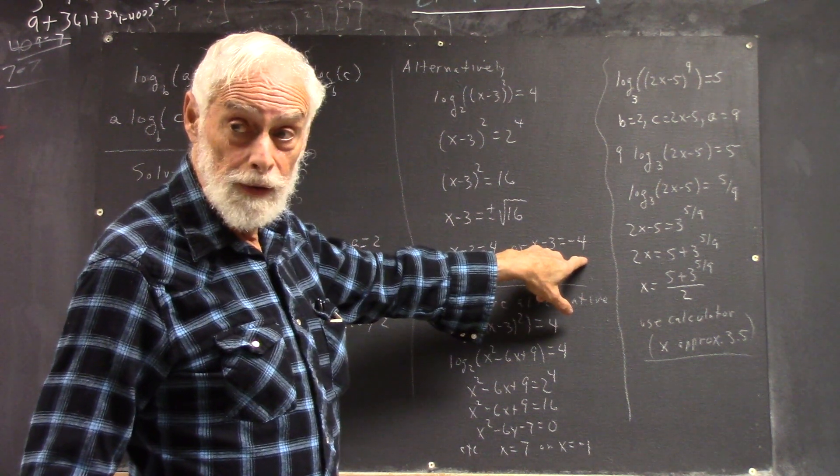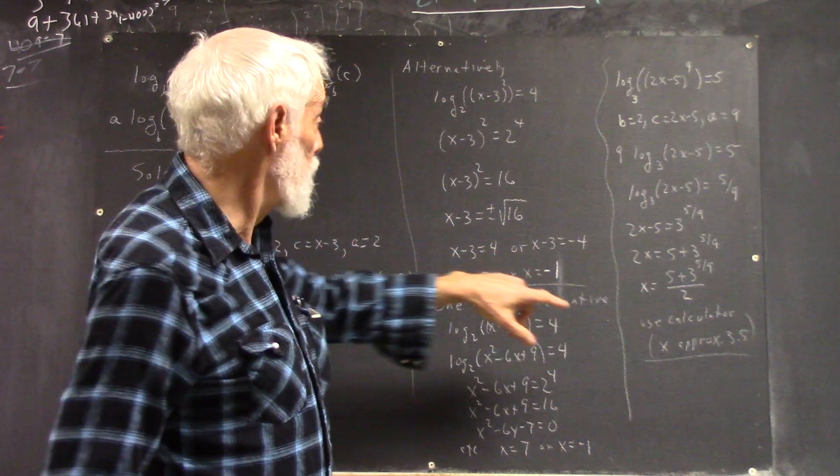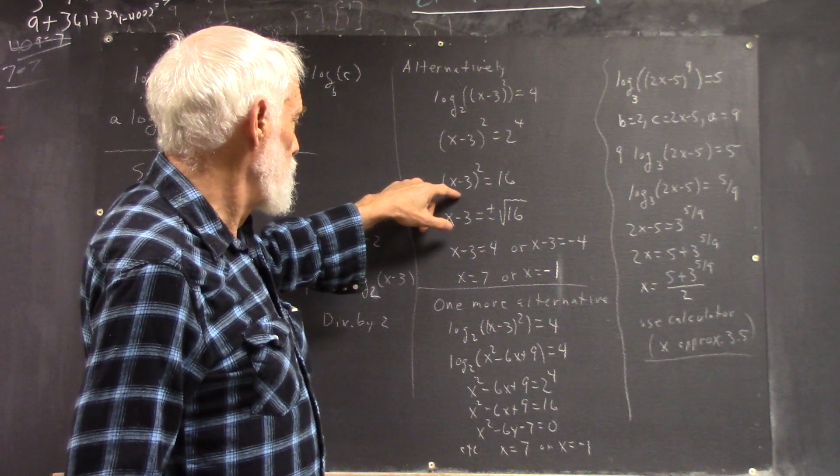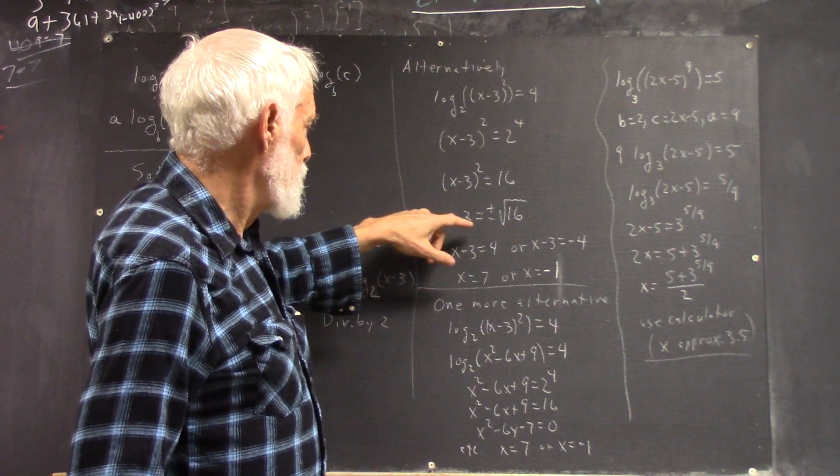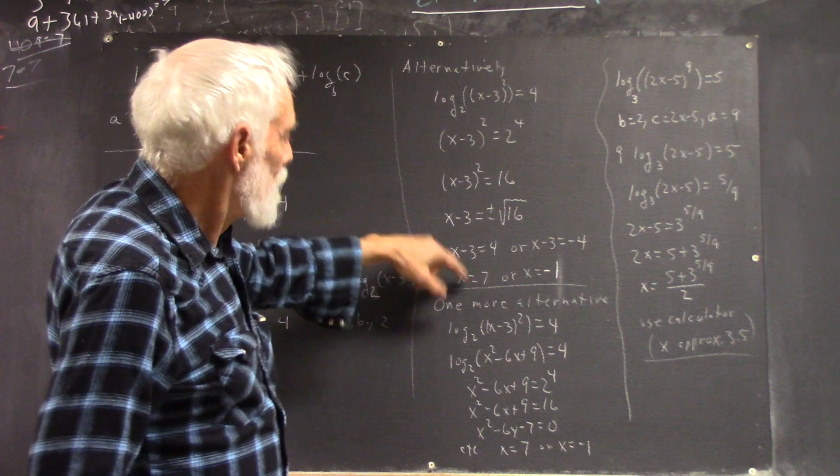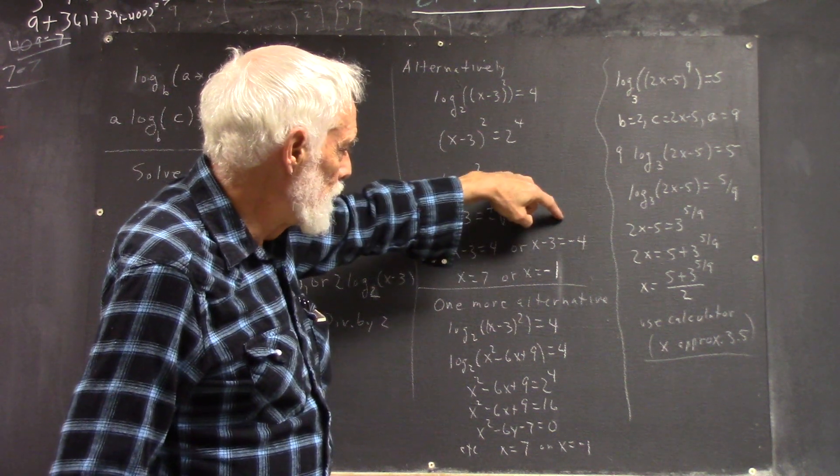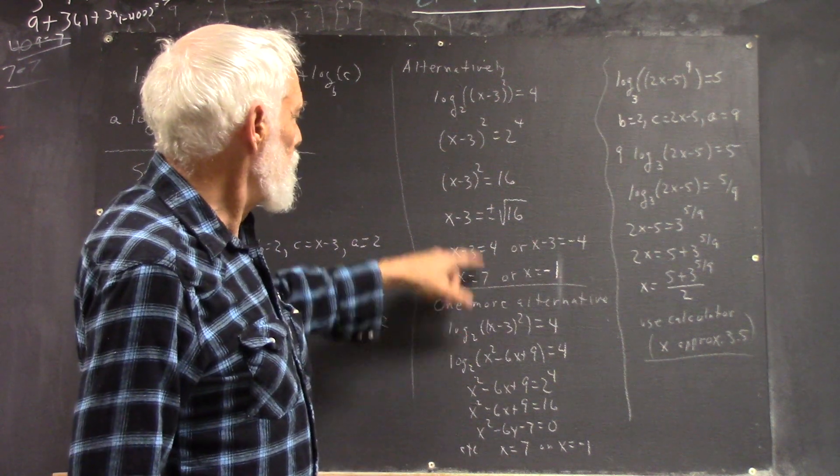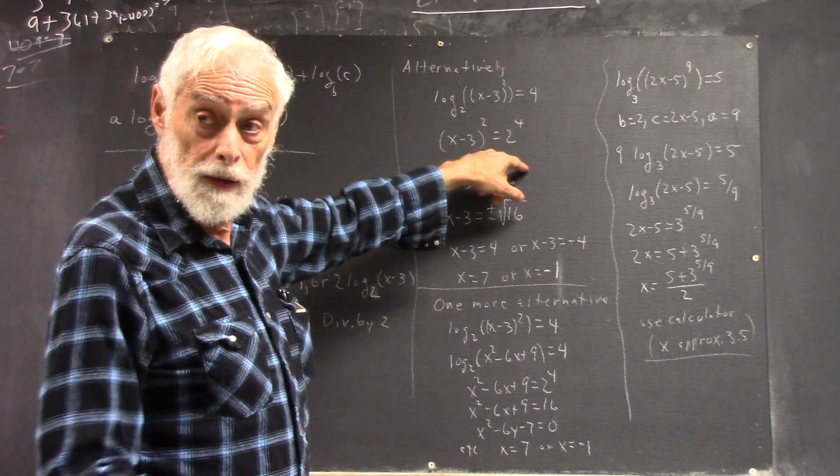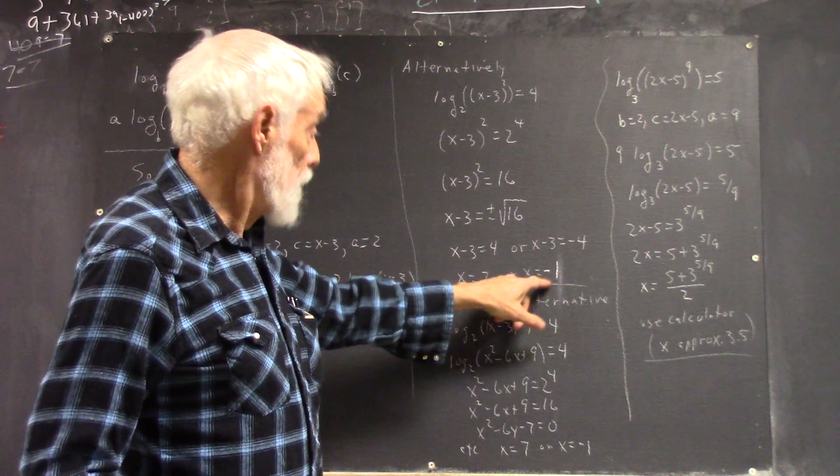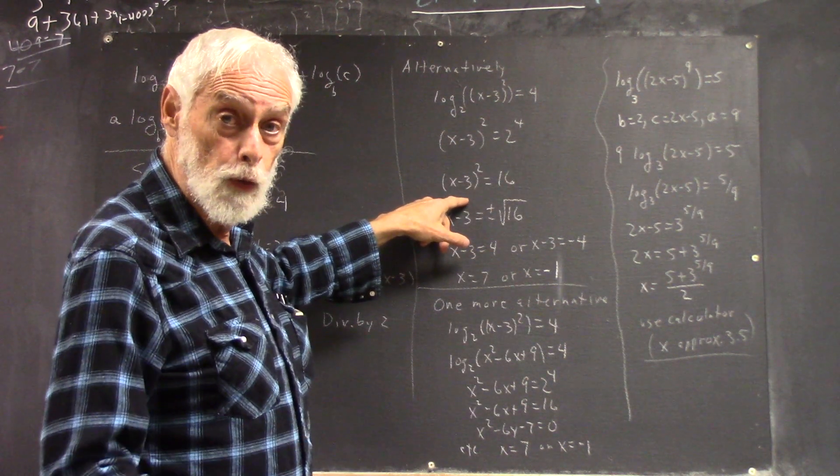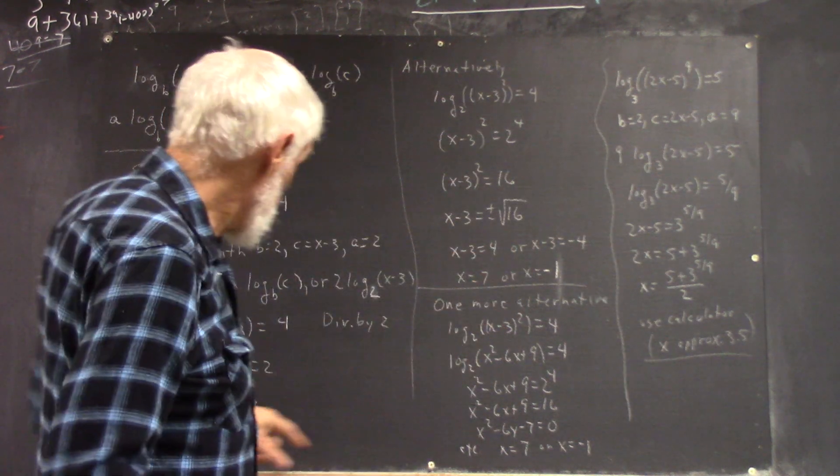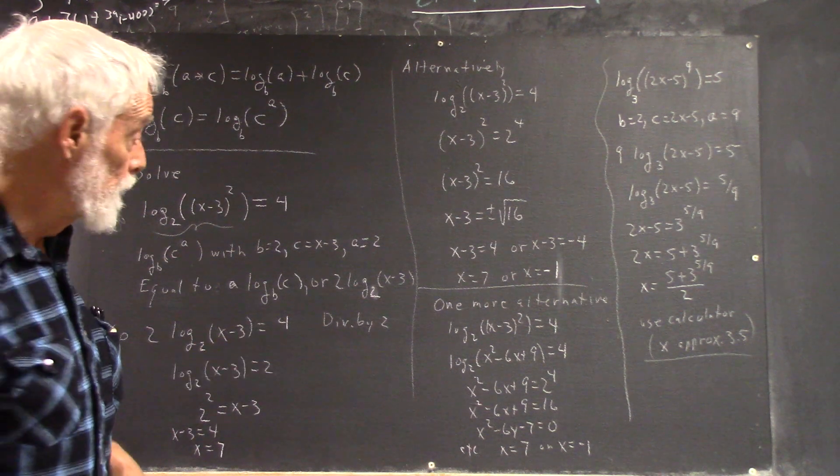X minus 3 could be plus the square root of 16, which would be 4, or negative square root of 16, which would be negative 4. X minus 3 equals 4 gives you X equals 7. X minus 3 equals negative 4 gives you X equals negative 1. If you plug in 7, 7 minus 3 is 4, square that you get 16. Plug in negative 1, you get negative 4, square that you get 16. There are two solutions, and this didn't show both. Just something you've got to be careful about.